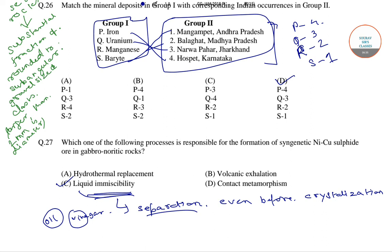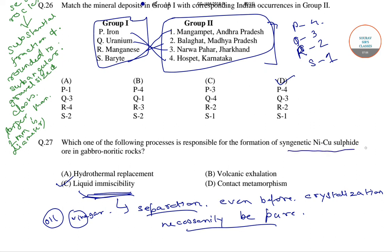The separation is not necessarily pure, but the separated liquid can be rich in certain kinds of minerals. This process leads to the formation of ores. The formation of magmatic nickel-copper sulfide ores in gabbronorite rocks follows the same process of liquid immiscibility.